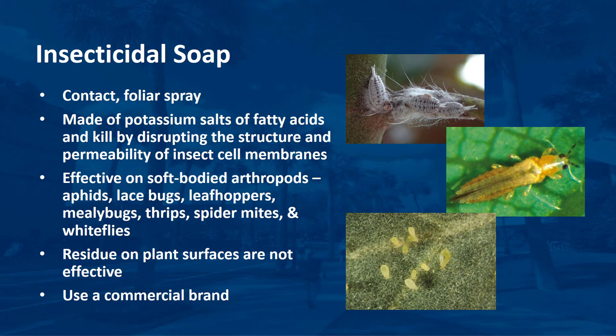Most commercially available insecticidal soaps are made of potassium salts of fatty acids and kill by disrupting the structure and permeability of insect cell membranes. Insecticidal soaps are most effective on soft-bodied arthropods such as aphids, lacebugs, leafhoppers, mealybugs, thrips, spider mites, and whiteflies. They are not effective on pests as a residue on the plant's surface and therefore are not toxic to pollinators after the spray dries.